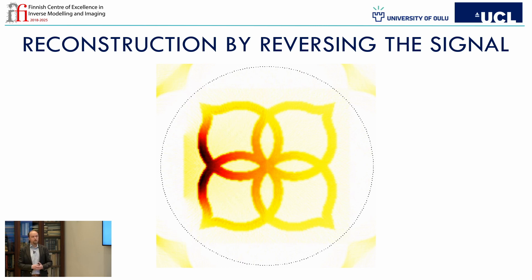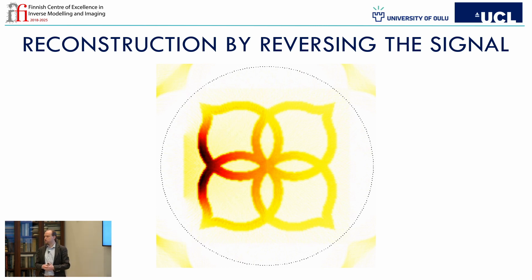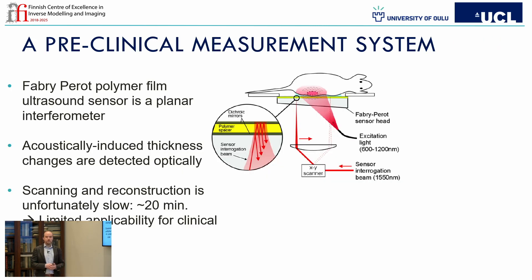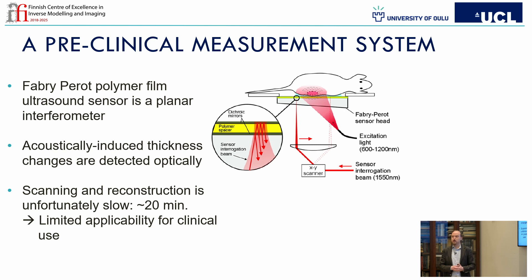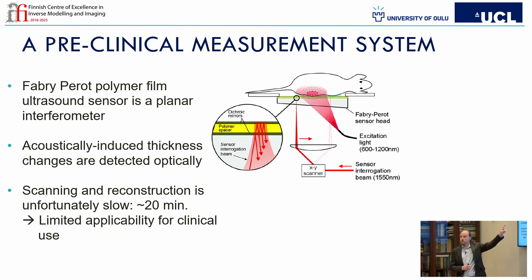Unfortunately in practice it doesn't always work so nicely. In particular, we can't surround our target with a full circle, or in 3D with a whole sphere — that's a problem. In the lab at UCL it looks like this: we have our target lying on the sensor, and we have a planar sensor underneath the target. The measurement process is we excite the target with a short laser pulse; the light gets absorbed, which heats up the tissue, and we get the pressure wave that we collect with our sensor.